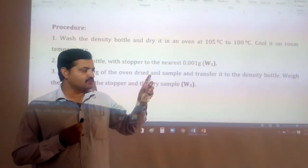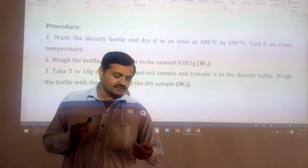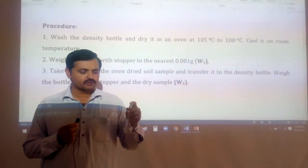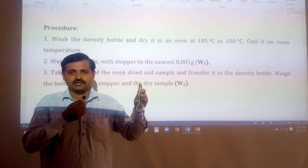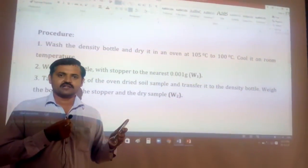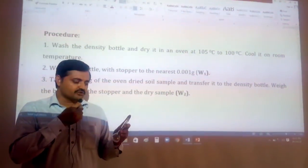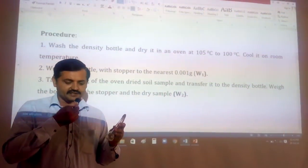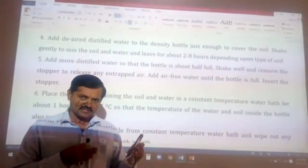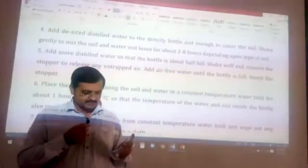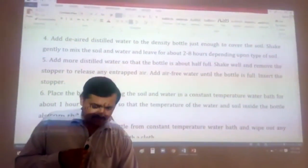Now let us discuss the experimental procedure. Step one: wash the density bottle with water, then dry it in an oven at a temperature of 105 to 110 degrees centigrade. After it is completely dry, cool it to room temperature, then take its weight — this will be known as the weight of the empty density bottle, W1. After that, take about 5 to 10 grams of dry soil and put it inside the empty density bottle. Take this weight as W2 — the weight of the density bottle plus dry soil. Next, add just enough water to cover the soil sample.